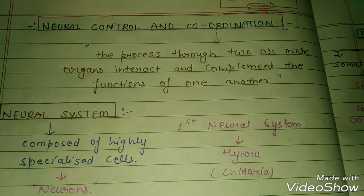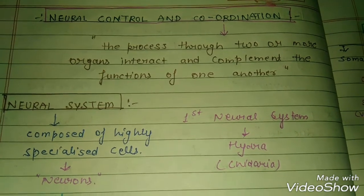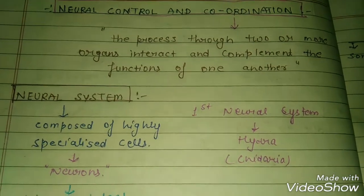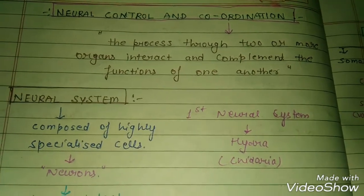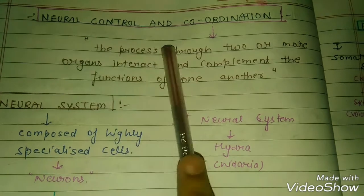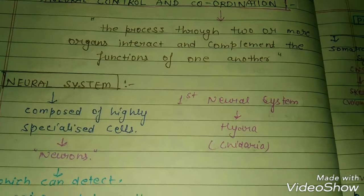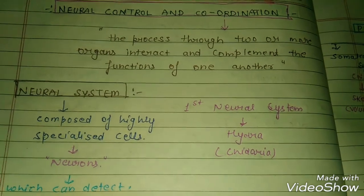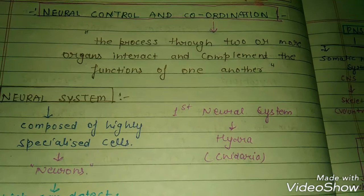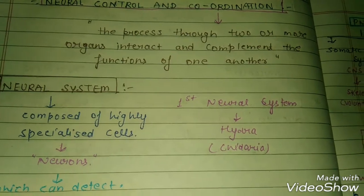In this video I'm talking about an important chapter of Class 11th Biology: Neural Control and Coordination. I have already uploaded the first chapter, Living World, and the second, Biological Classification. Now I will cover the last important chapters: Neural Control and Coordination and Endocrine System. This approach will help you easily tackle both tough and easy chapters.